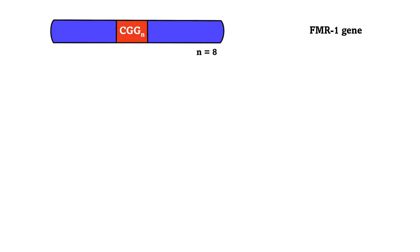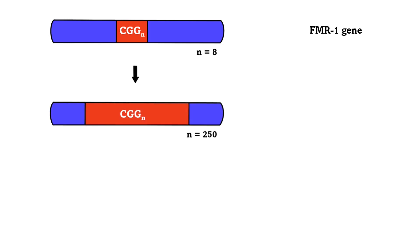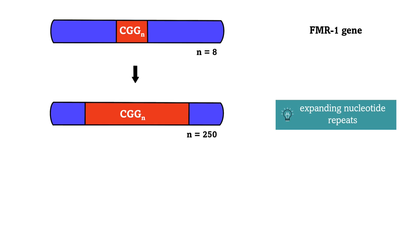The copies of the trinucleotide in the gene increase in number over time. A normal FMR1 gene contains 6 to 69 copies of the repeat, but abnormal FMR1 genes can contain up to 1500 copies of the trinucleotide. Mutations that increase the number of copies of a set of nucleotides are generally called expanding nucleotide repeats.